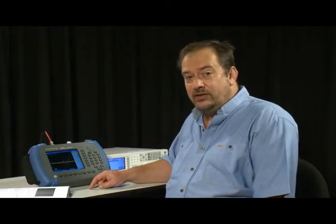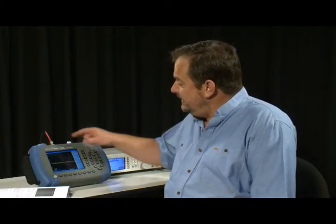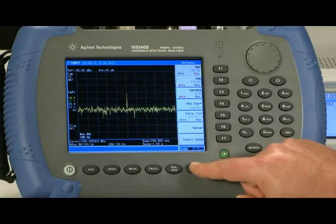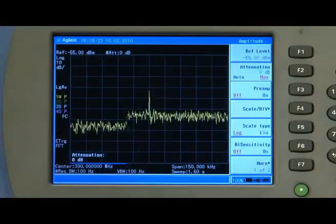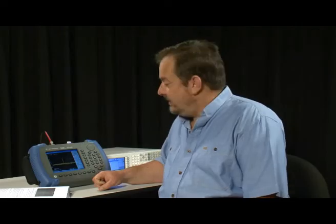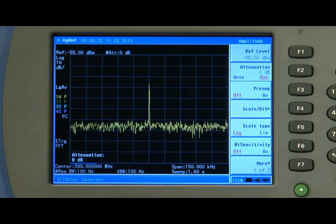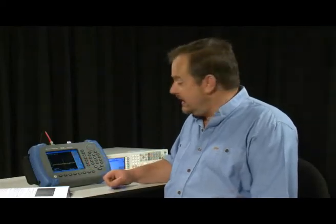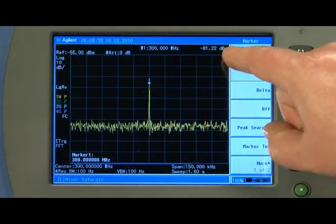Now there's one more thing we can do to improve the sensitivity still further and that's to remove all the attenuation in the input signal path. So I'll press the amplitude button, press the attenuation button and enter 0 dB. And as you can see that's given us roughly another 10 dB of sensitivity on the noise floor. And we can clearly see now the third harmonic signal from the signal generator. And if you want to measure the level of that, let's just press the marker button and we can read it off here, minus 81 dBm.